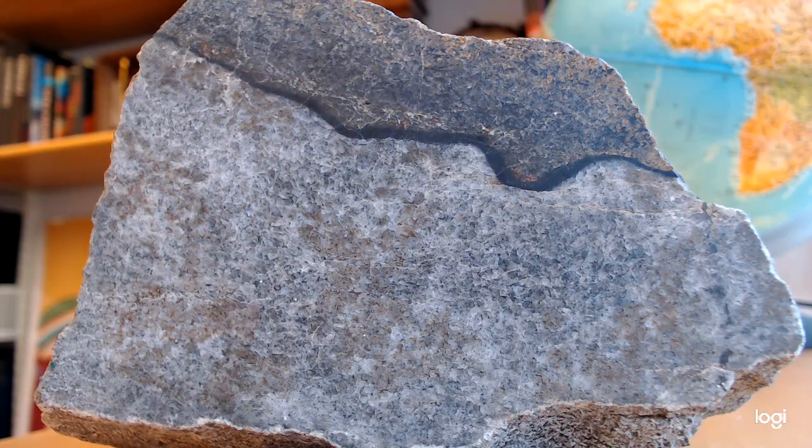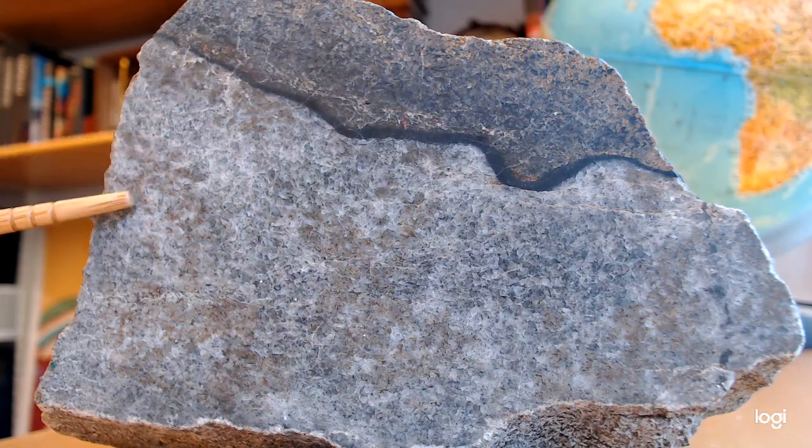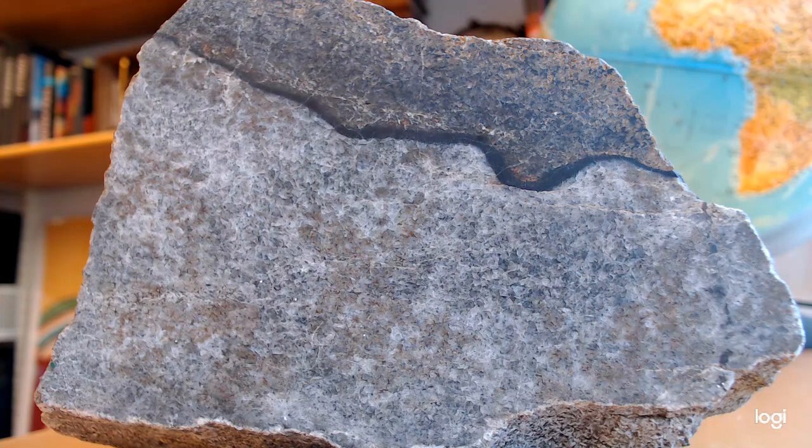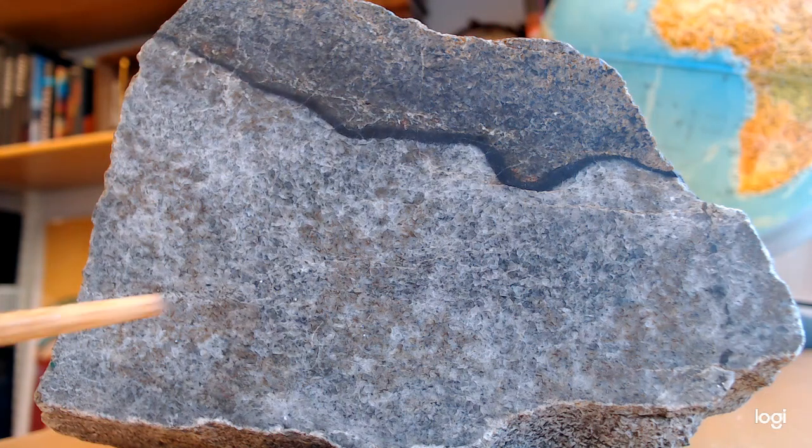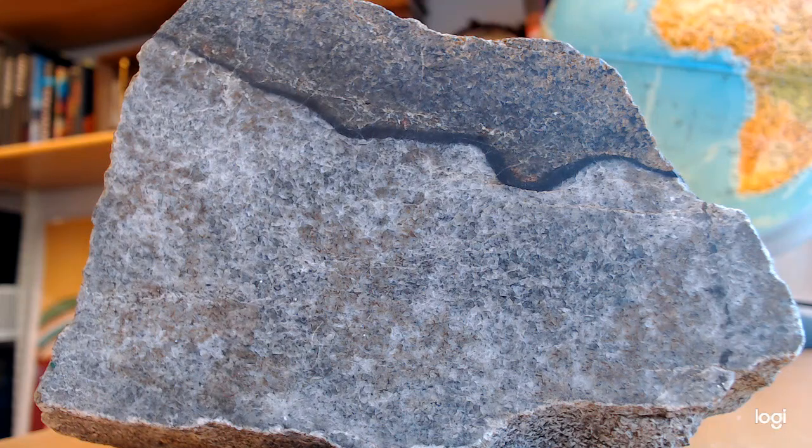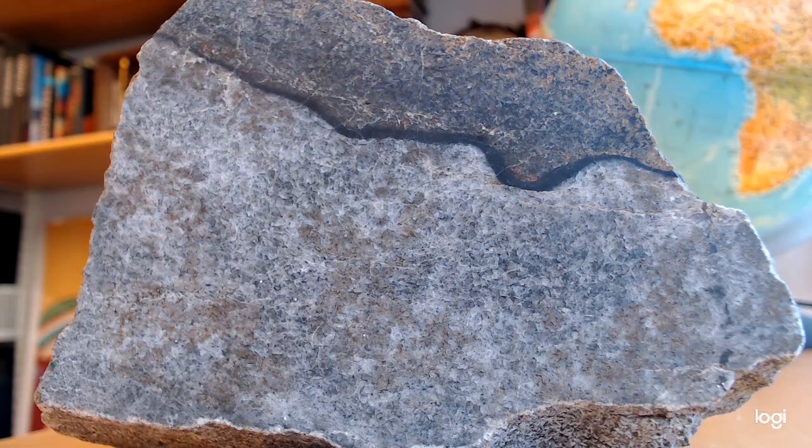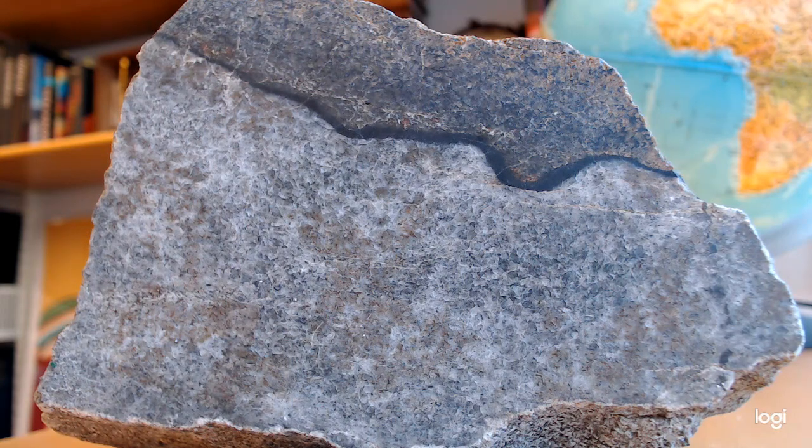Here in the lower part we have a feldspar rich rock which also has some olivine. Here's the olivine, here's the feldspar domains, and this is a troctolite, or the local name is alivalite after the hill of Halival. Alivalite is a feldspar rich troctolite with a little bit of olivine.